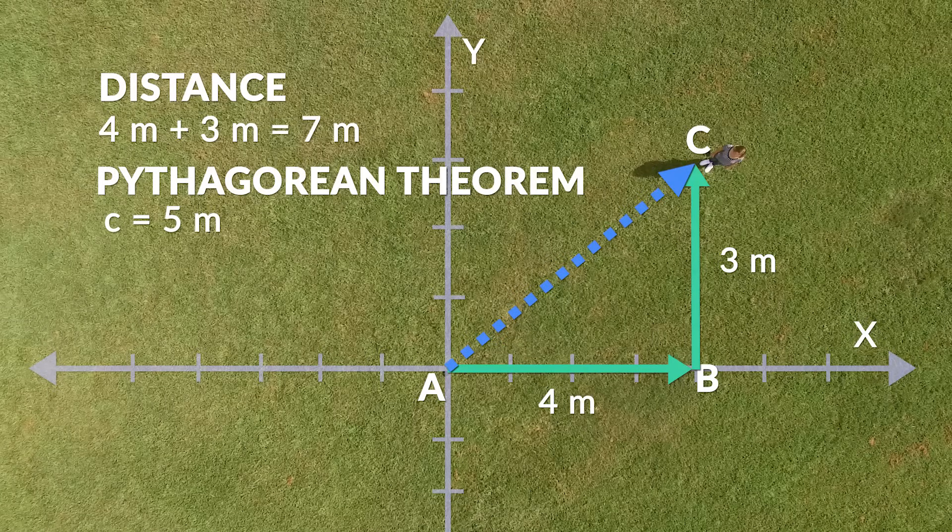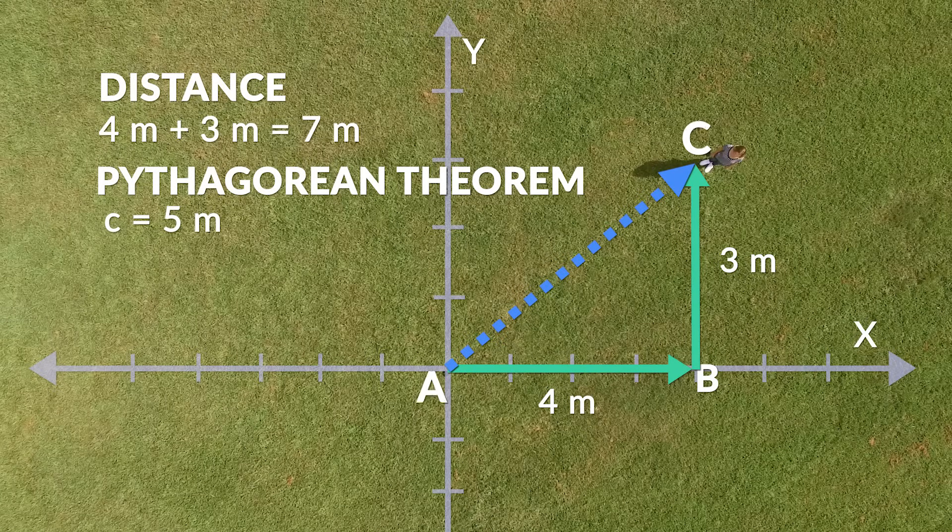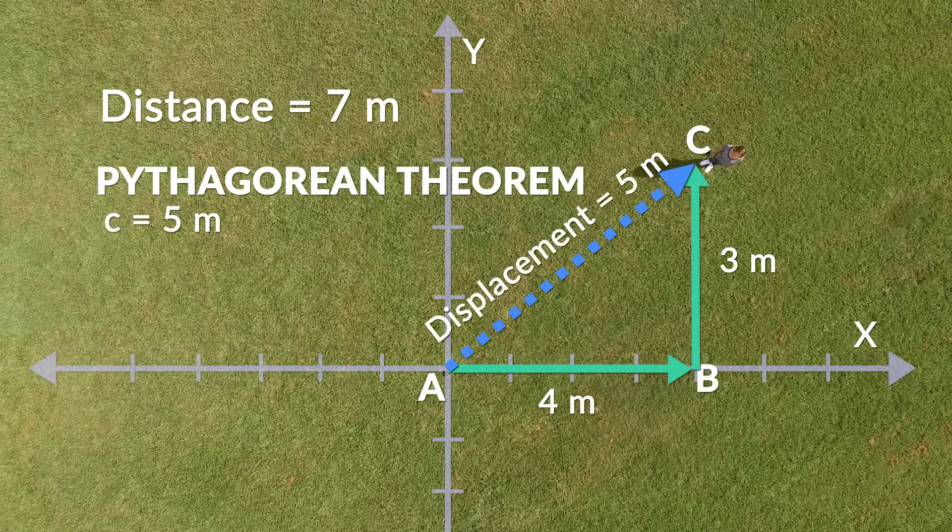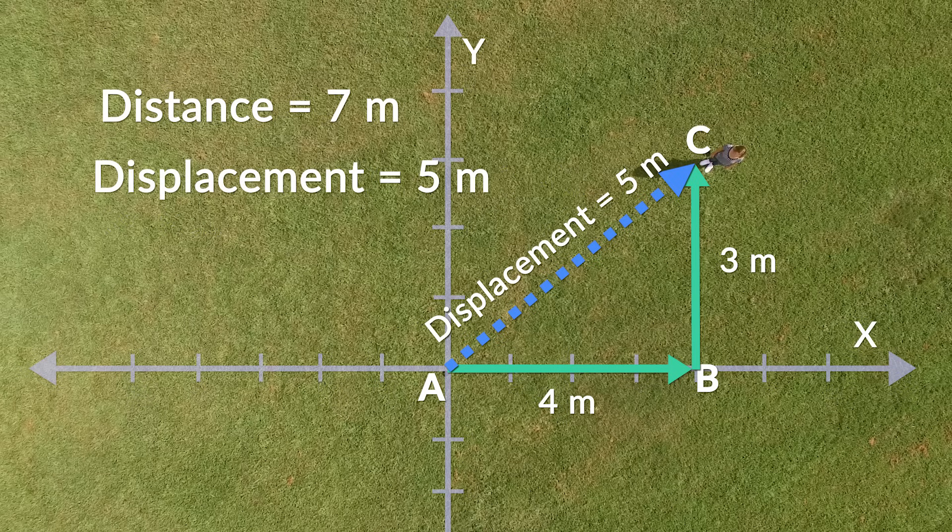So, even though the distance we traveled in our journey from A to C is seven meters, our displacement is five meters. Remember, displacement is a vector quantity. So, it has both magnitude and direction. So, our displacement is actually five meters northeast.